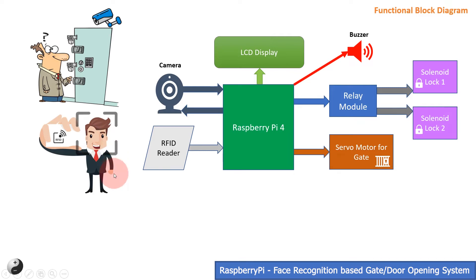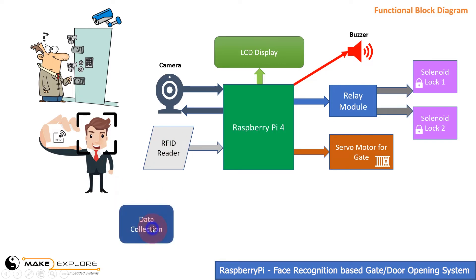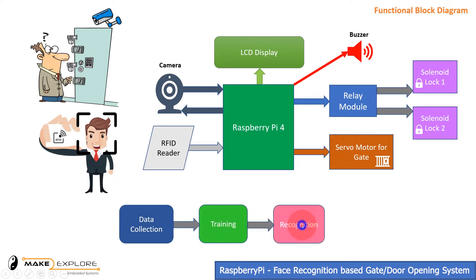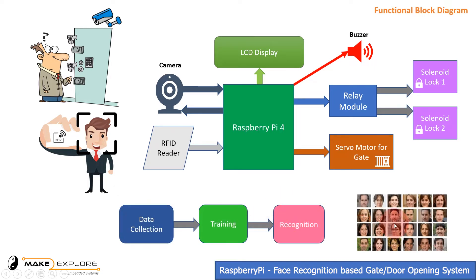Here comes the image processing and computer vision part. This project's programming is implemented in three stages: one is data collection, second is training, and third is recognition, which means authentication. In the data collection part, we will make a dataset of valid users' face images by capturing face snapshots of authorized users with different angles.